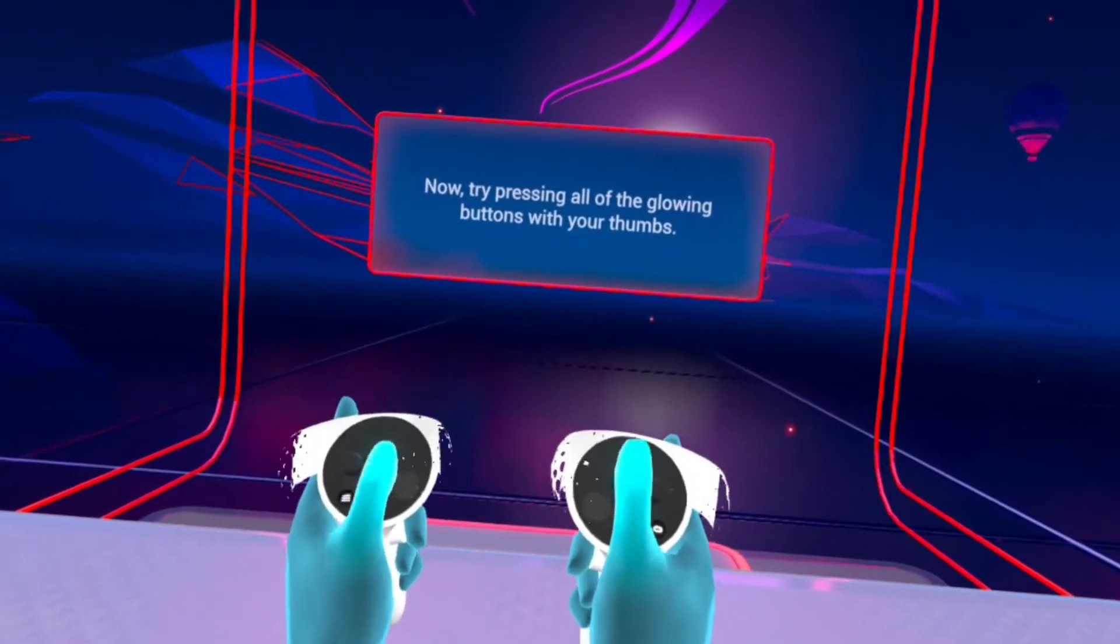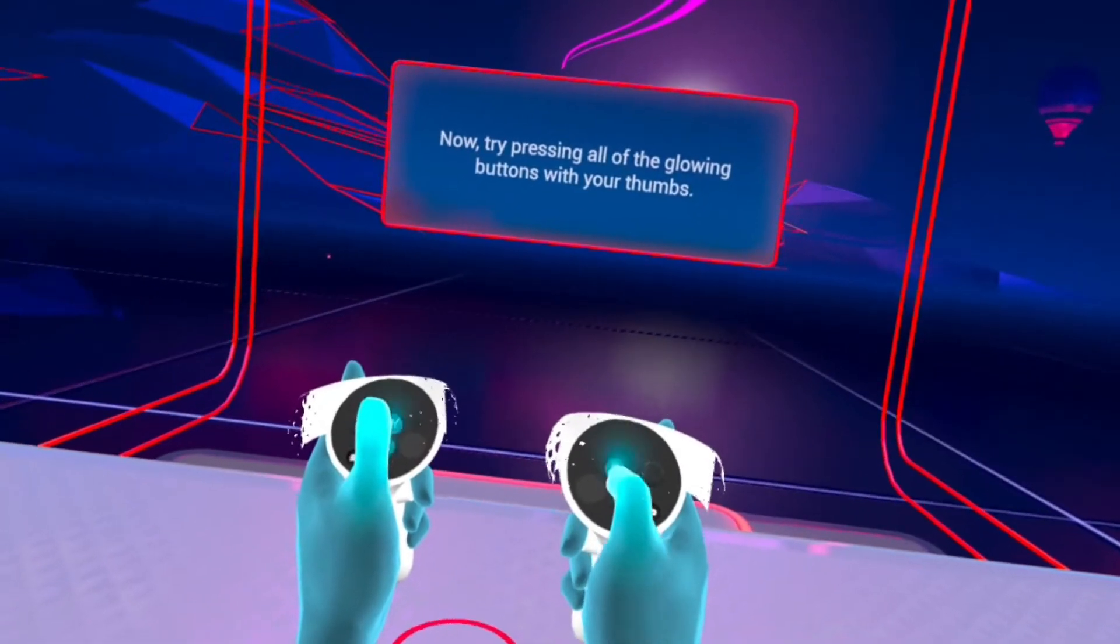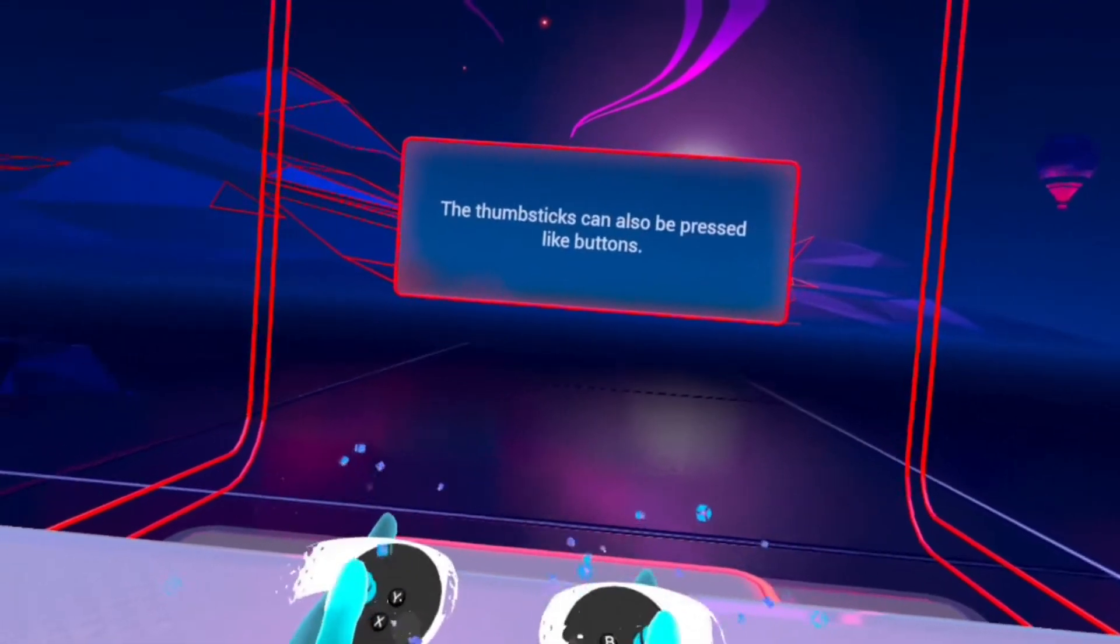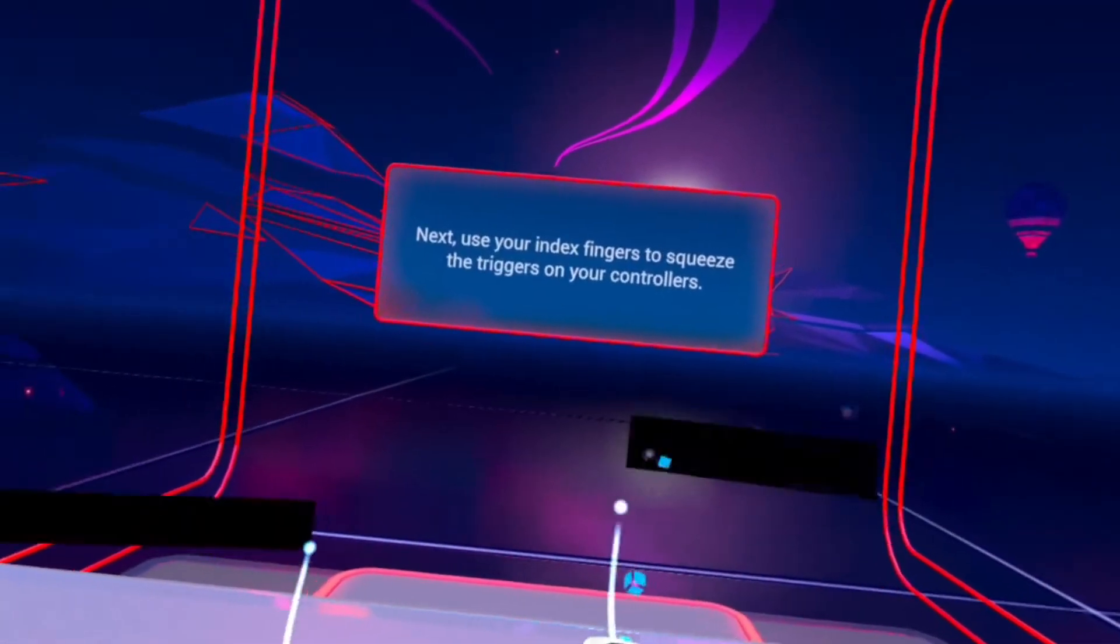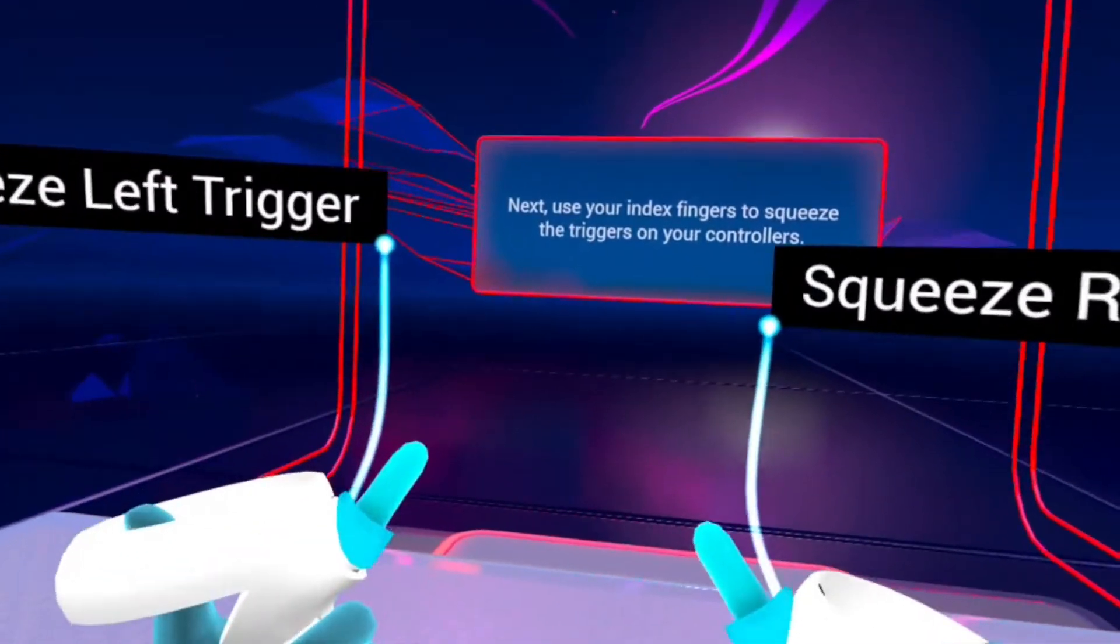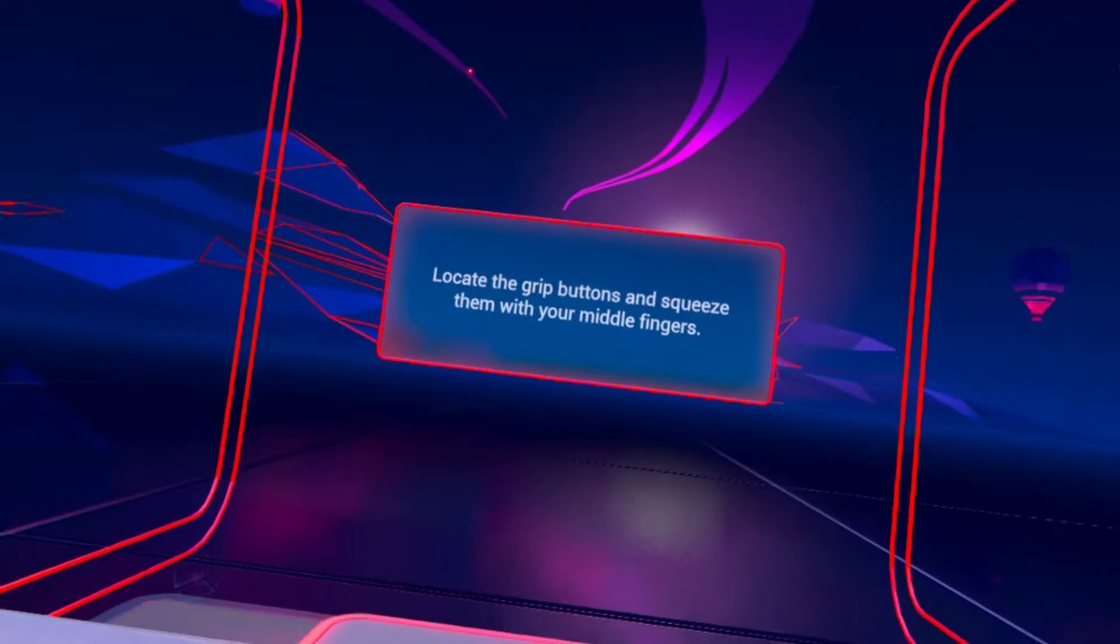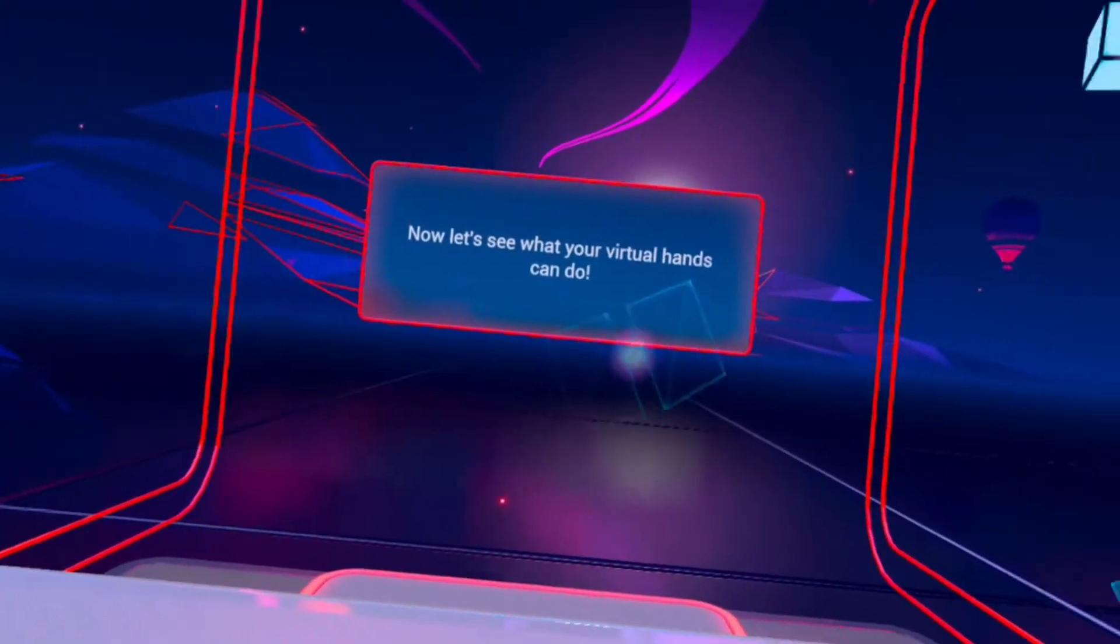Try pressing all of the glowing buttons with your thumbs. I'm actually moving my thumbs up and down and it's picking it up. Try moving the thumb sticks around. The thumb sticks can also be pressed like buttons. Next, use your index fingers to squeeze the triggers on your controllers. Locate the grip buttons and squeeze them with your middle fingers. Now let's see what your virtual hands can do.